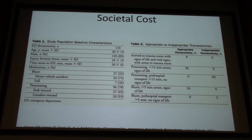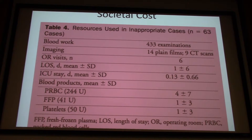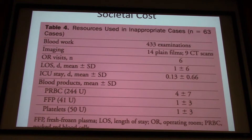There's a societal cost to consider as well. The same Passos paper looks at appropriate versus inappropriate thoracotomies — how many people had blood work done, how many had imaging they didn't need, how many went to the OR. If you crack a chest it has to go to the OR, but with only one trauma OR at night, that means calling in more staff for additional patients coming in.